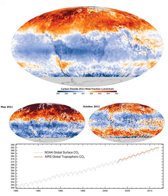Earth's natural greenhouse effect makes life as we know it possible, and carbon dioxide plays a significant role in providing the relatively warm temperature of the planet. The greenhouse effect is a process by which thermal radiation from a planetary atmosphere warms the planet's surface beyond the temperature it would have in the absence of its atmosphere.